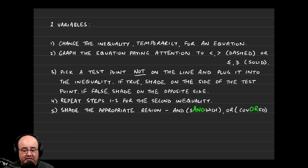If, on the other hand, you get a false statement, then you shade on the opposite side of the test point, on the other side of the line.